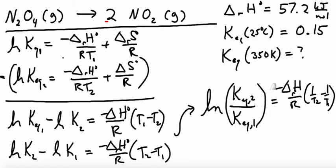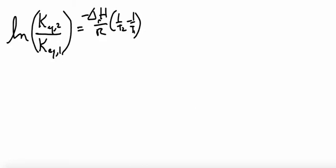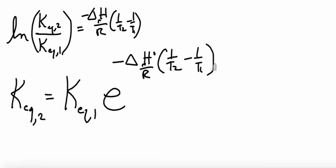Anyway, let's go ahead and do our example. We have everything that we need for this problem. The only thing we're solving for is K equilibrium 2. That's our unknown. So let's solve for that. Solve this for K equilibrium 2, which is what we're looking for. So we'll take exponentials of both sides and then multiply by K equilibrium 1.